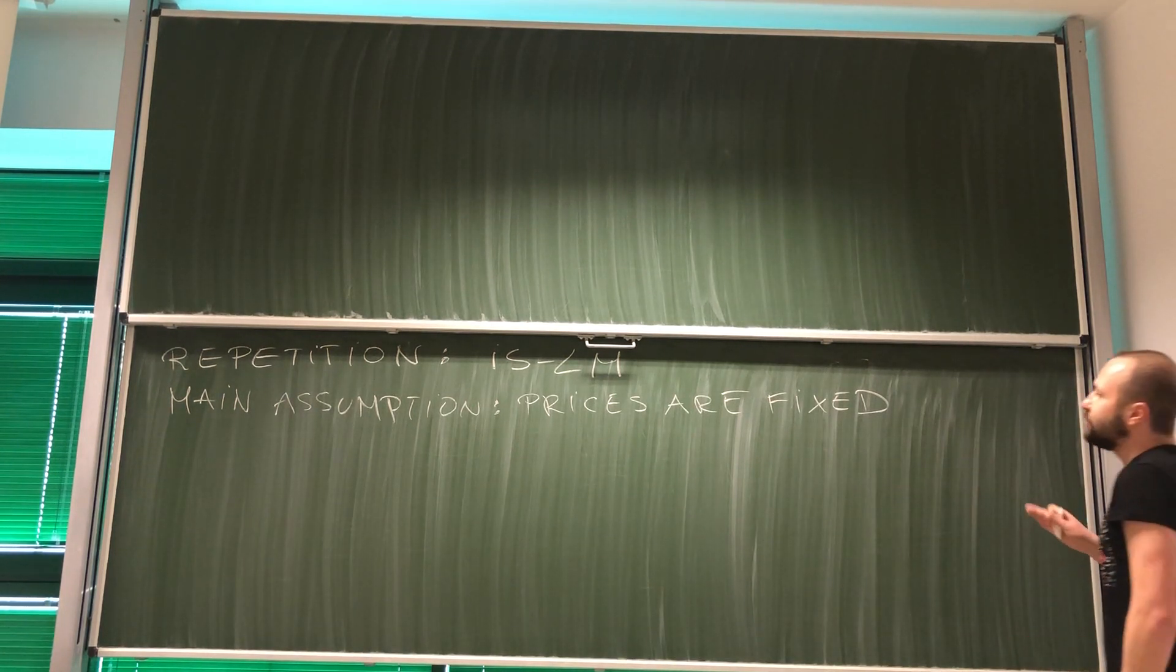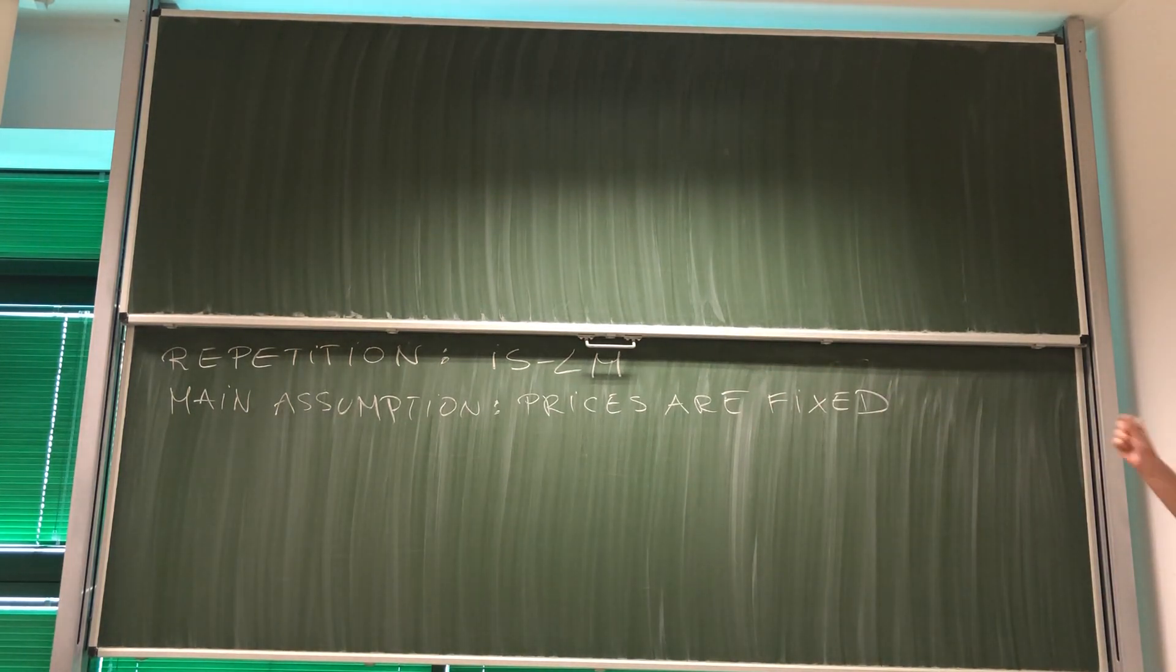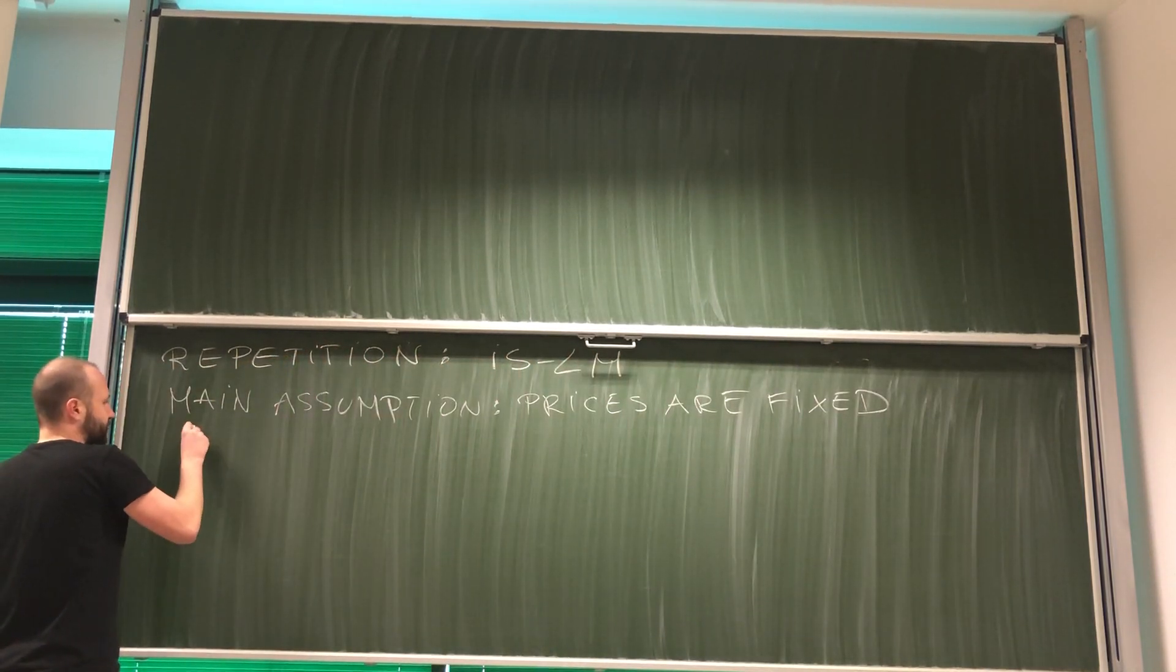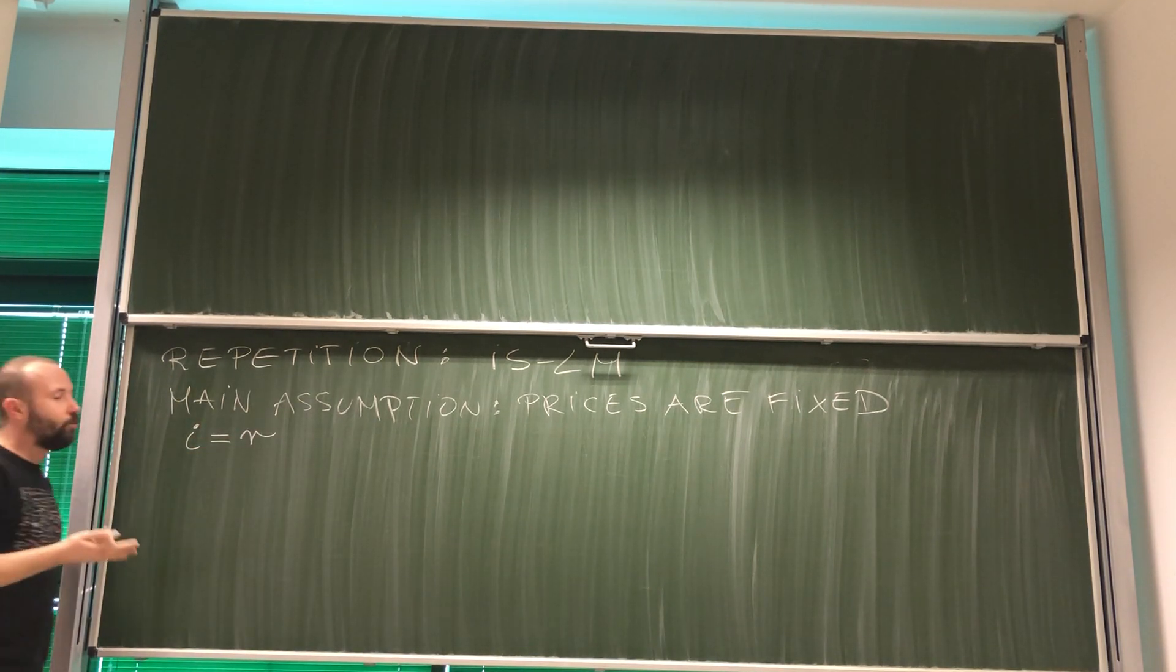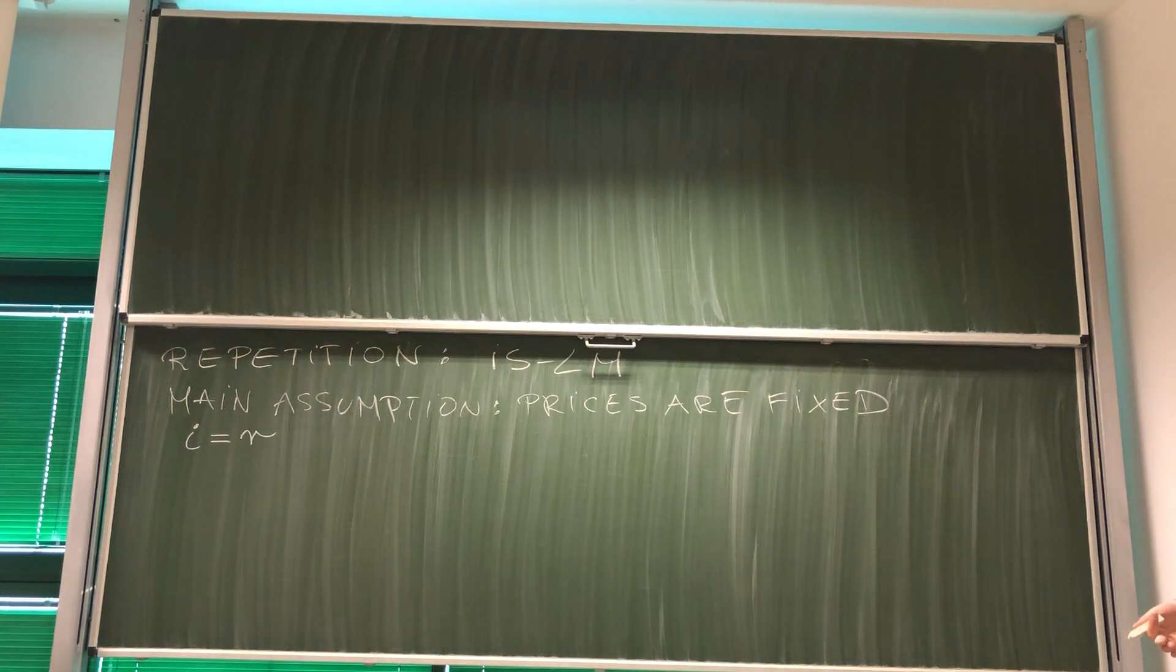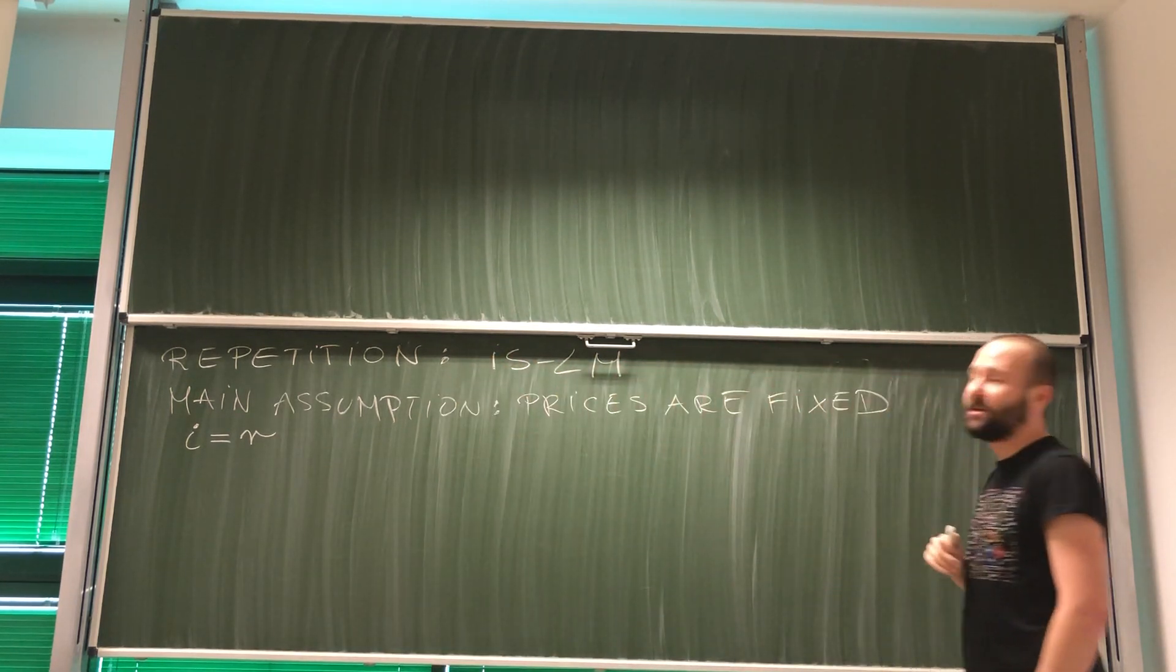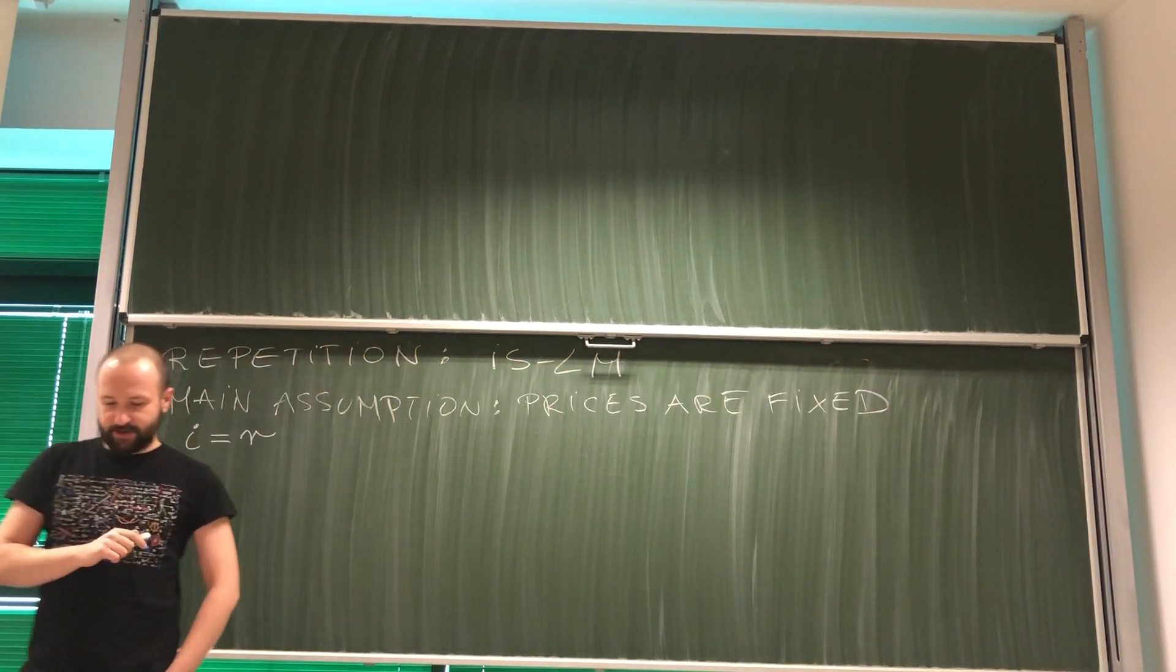Right away we should see that fixed prices have a very nice consequence for the model. Assuming that at the beginning price level is just 1, we get that nominal interest rate in the economy is exactly equal to real interest rate. So we don't need to worry about the difference between the two. For example, like an investment function. Because we should look at real interest rate, in this case with the fixed prices, we don't need to care about that. The two are equal.